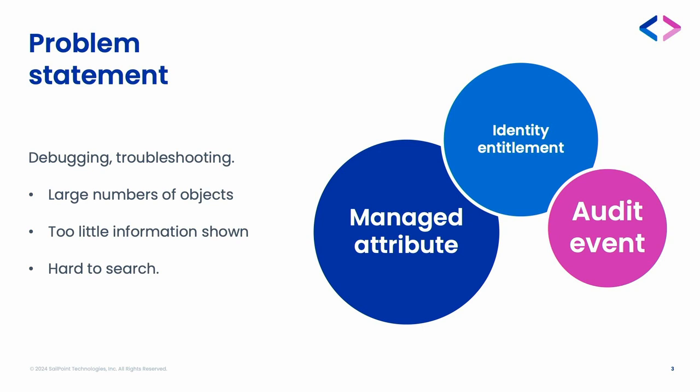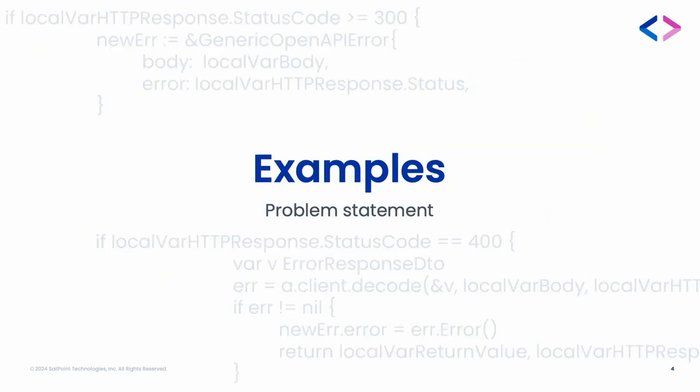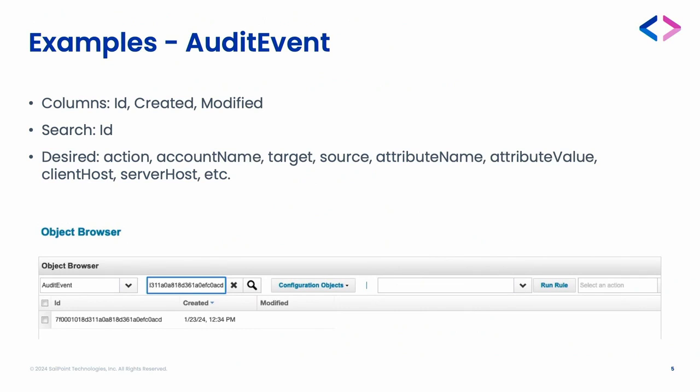In some cases, the objects only show a handful of attributes on the overview page, making it difficult to identify the right object. For example, with audit events there could be huge amounts, and in the overview page all we see is an ID and a created or modified timestamp — so it's very difficult to identify the right audit event objects.